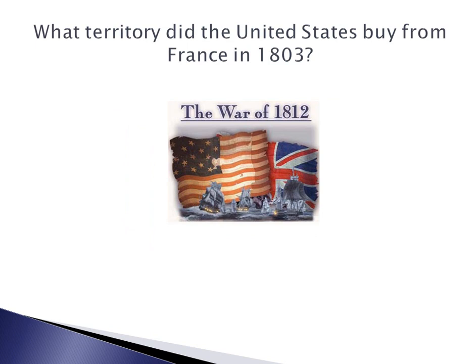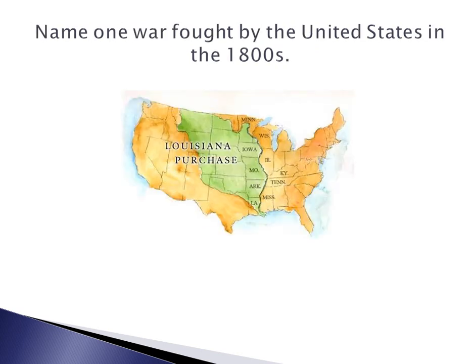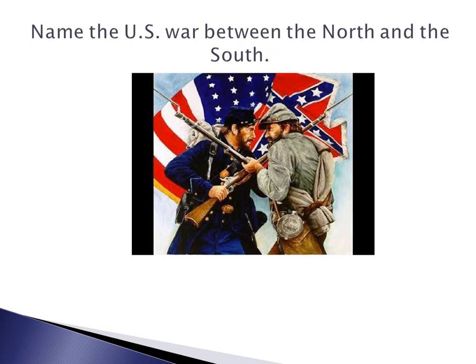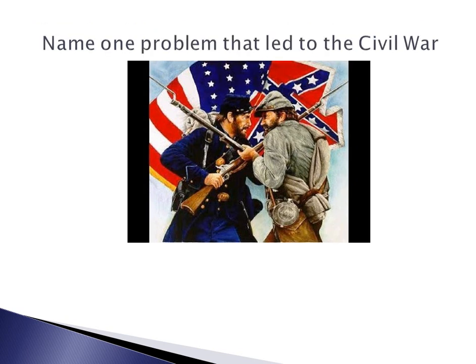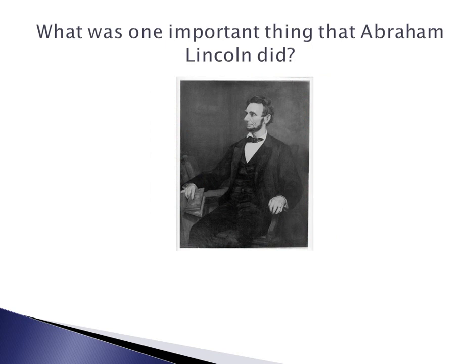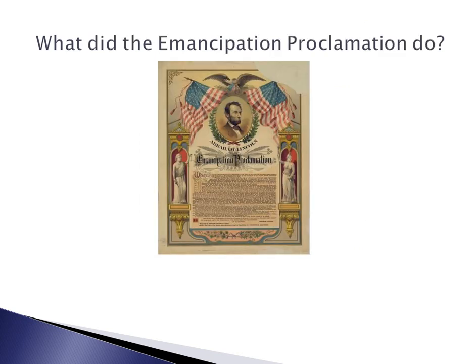What territory did the United States buy from France in 1803? Name one war fought by the United States in the 1800s. Name the U.S. war between the North and South. Name one problem that led to the Civil War. What was one important thing that Abraham Lincoln did? What did the Emancipation Proclamation do? What did Susan B. Anthony do?